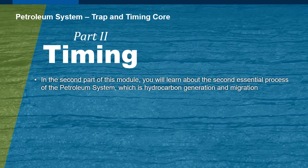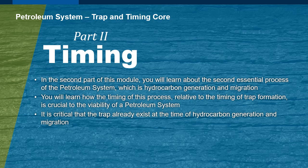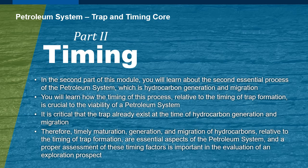In the second part of this module you will learn about the second essential process of the petroleum system, which is hydrocarbon generation and migration, and you will learn how the timing of this process relative to the timing of trap formation is crucial to the viability of a petroleum system. It is critical that the trap already exists at the time of hydrocarbon generation and migration. Therefore, timely maturation, generation, and migration of hydrocarbons relative to the timing of trap formation are essential aspects of the petroleum system, and a proper assessment of these timing factors is important in the evaluation of an exploration prospect.